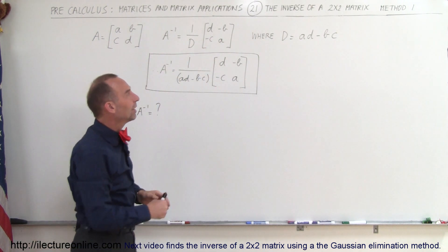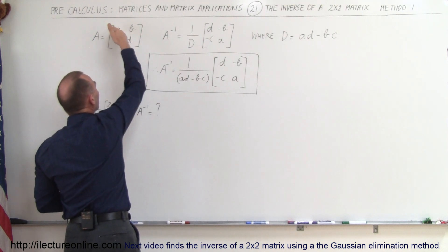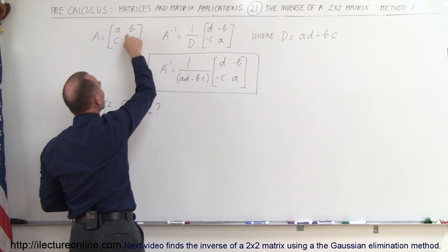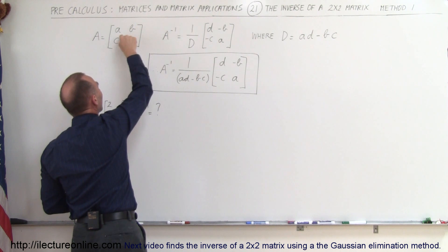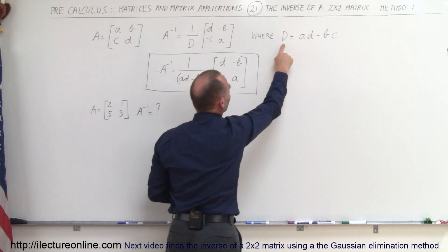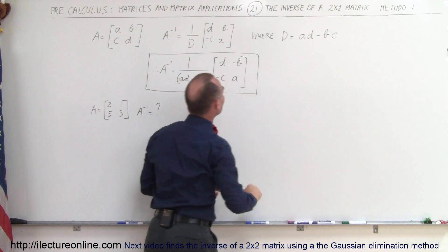And the determinant is equal to the elements of the diagonal multiplied, a times d, and subtract when you multiply the reverse diagonal, b and c. So the determinant is a times d minus b times c.